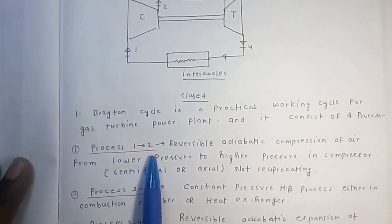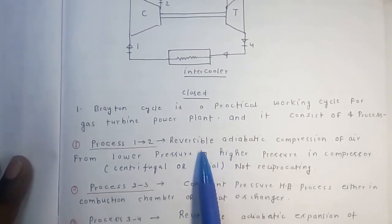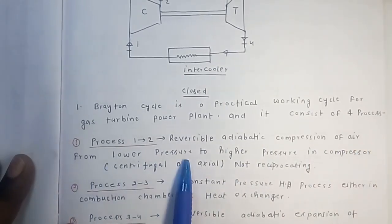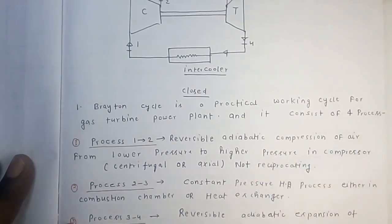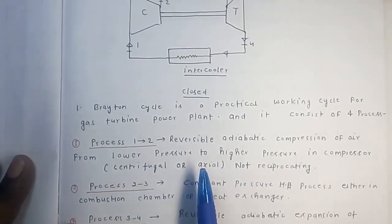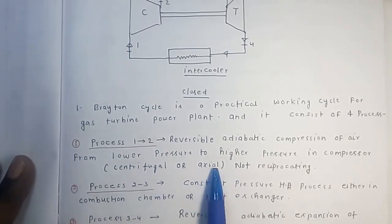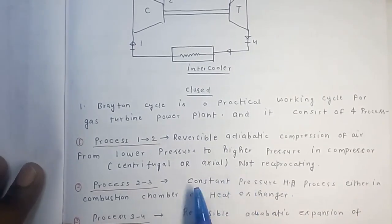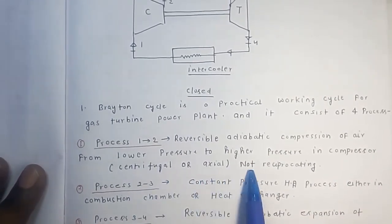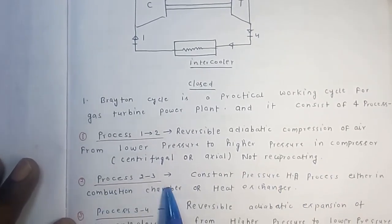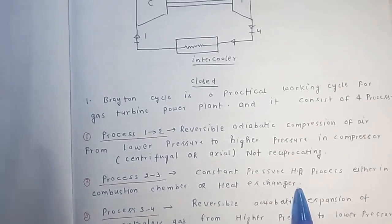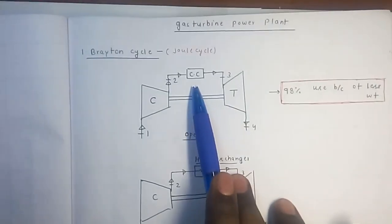The Brayton cycle consists of four processes. Process 1 to 2 is reversible adiabatic compression of air — from lower pressure to high pressure in the compressor. Here, axial or centrifugal compressors are used; reciprocating compressors are NOT used in the Brayton cycle. Process 2 to 3 is constant pressure heat addition in the combustion chamber (for open cycle) or in the heat exchanger (for closed cycle).